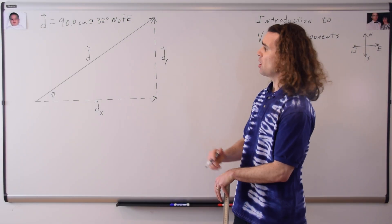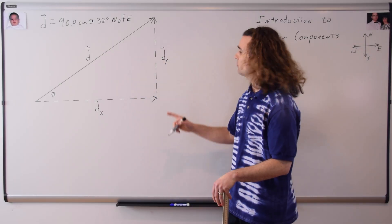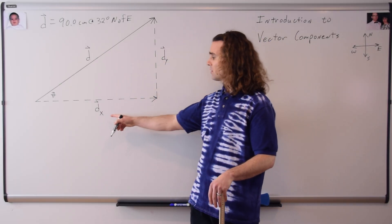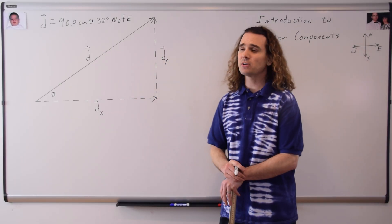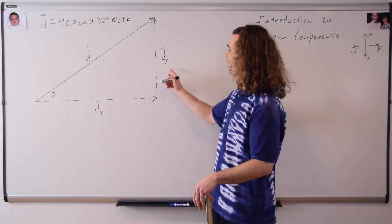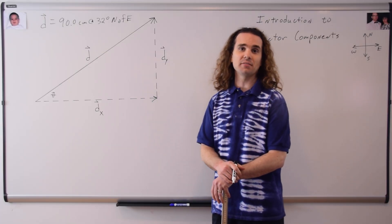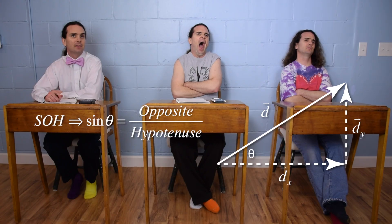Bo, how can we find the components of vector d? How can we find d in the y-direction or d in the x-direction? In other words, how can we find either of these two sides of the triangle? Well, this is a right triangle, so... Sure, Bo, you can use SOH-CAH-TOA!